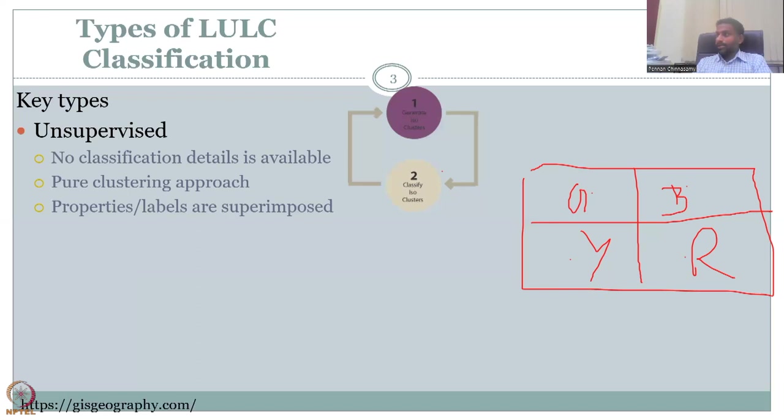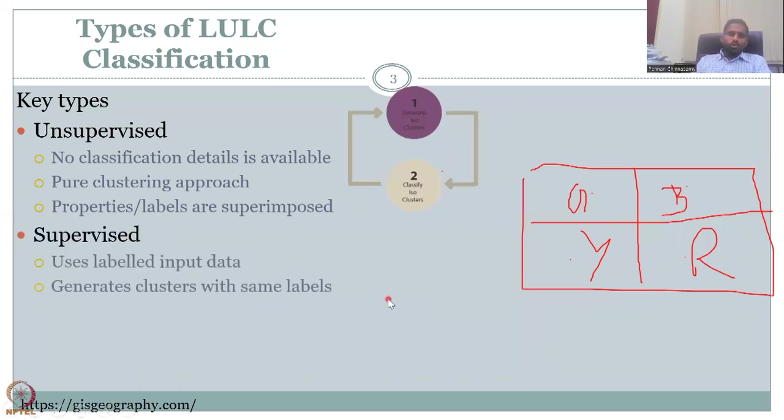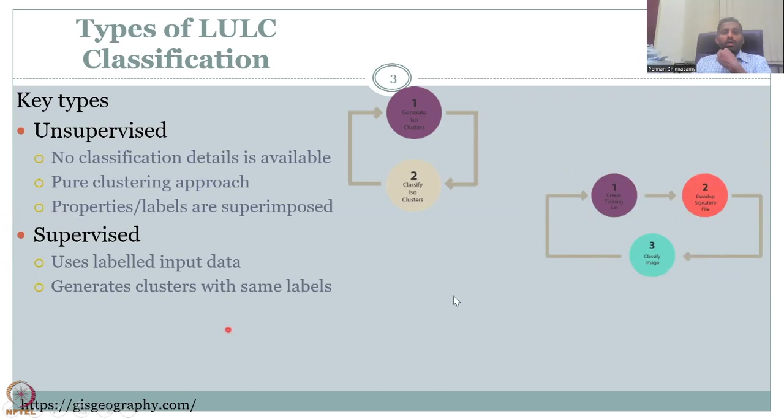Now we'll go to the next part, which is supervised classification. So in supervised classification, we give the labeled input data. For example, I say these greens club it together and call it agriculture, especially paddy. So once I tell that these greens club together, all these greens will be club together and they will be used as green for paddy in the classification. So what will be the output? The output will be a generation of clusters with some labels, which are the same as I have given.